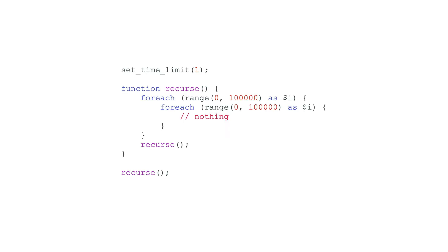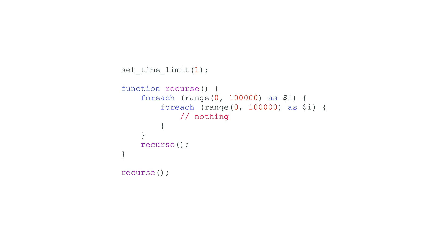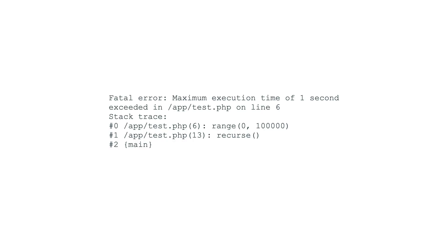Before PHP 8.5, errors do not provide a backtrace, which makes it a challenge to determine exactly what's wrong. For example, looking at this modified example from the RFC, when run in PHP 8.4 we get a less-than-helpful error that just tells us we've reached the maximum execution time on some random line. Maximum execution time errors are always tricky because the point at which the script dies can be non-deterministic. However, when we run the same code in PHP 8.5, we get a full stack trace. This is another one of those changes that seems like no big deal but is going to save a ton of debugging time.